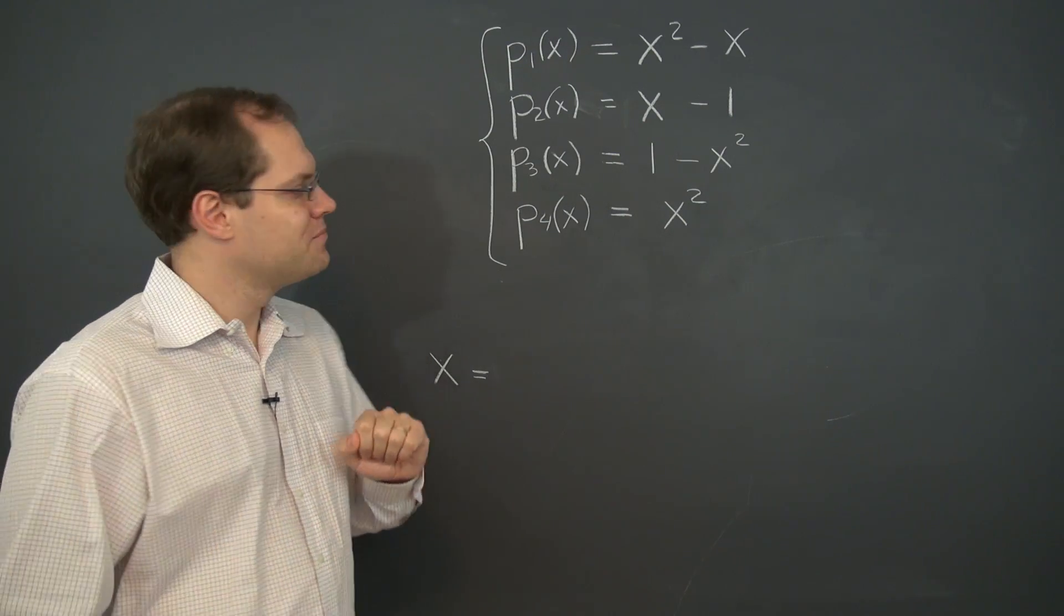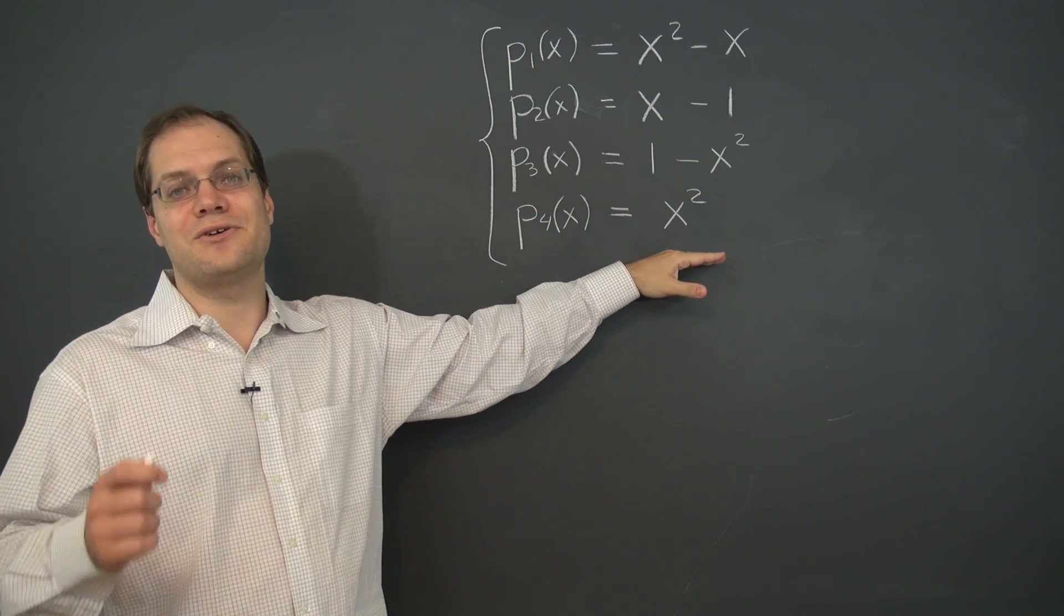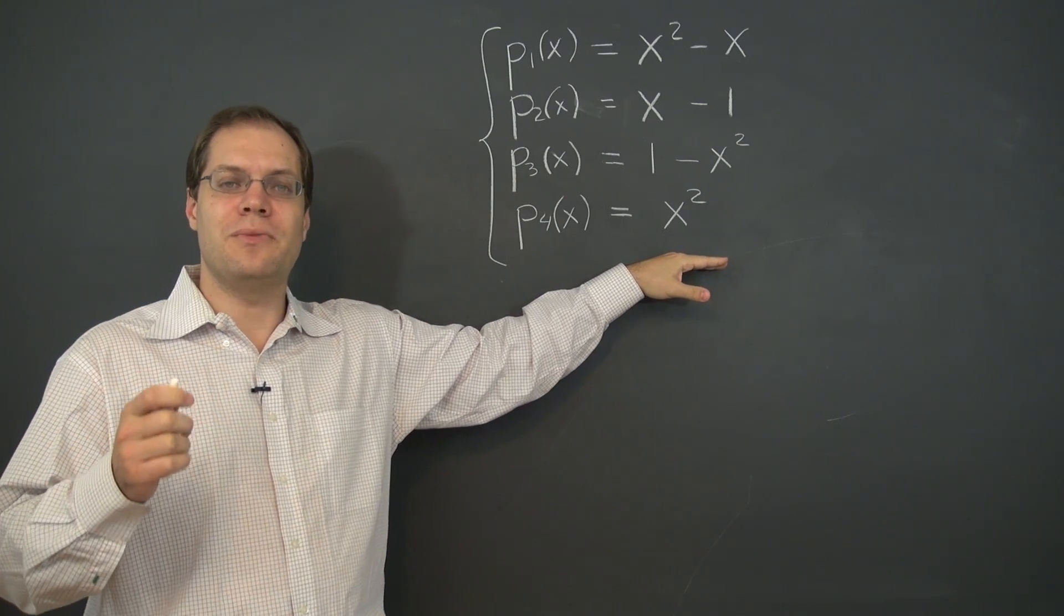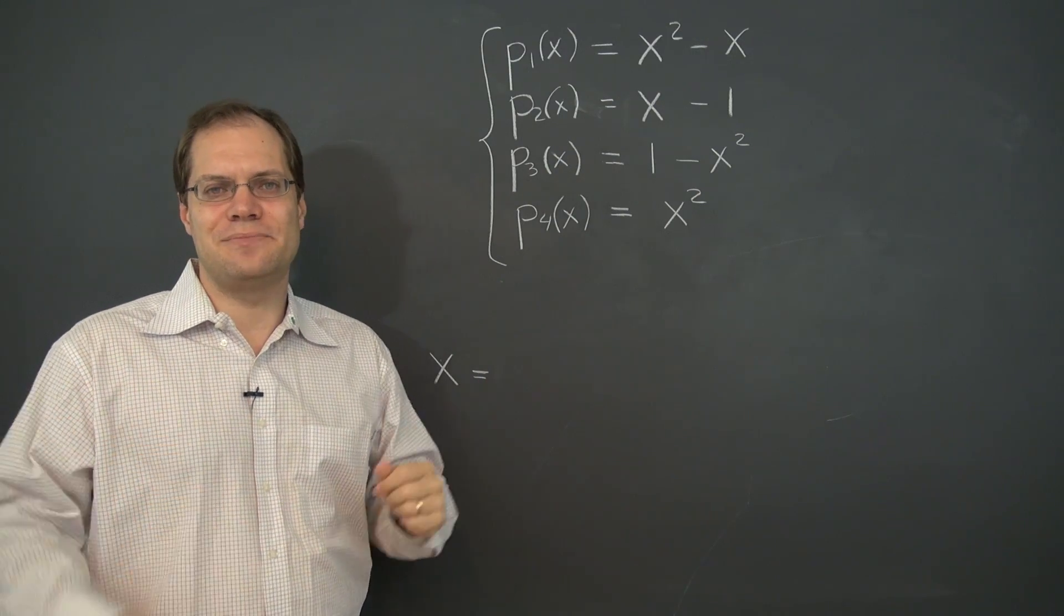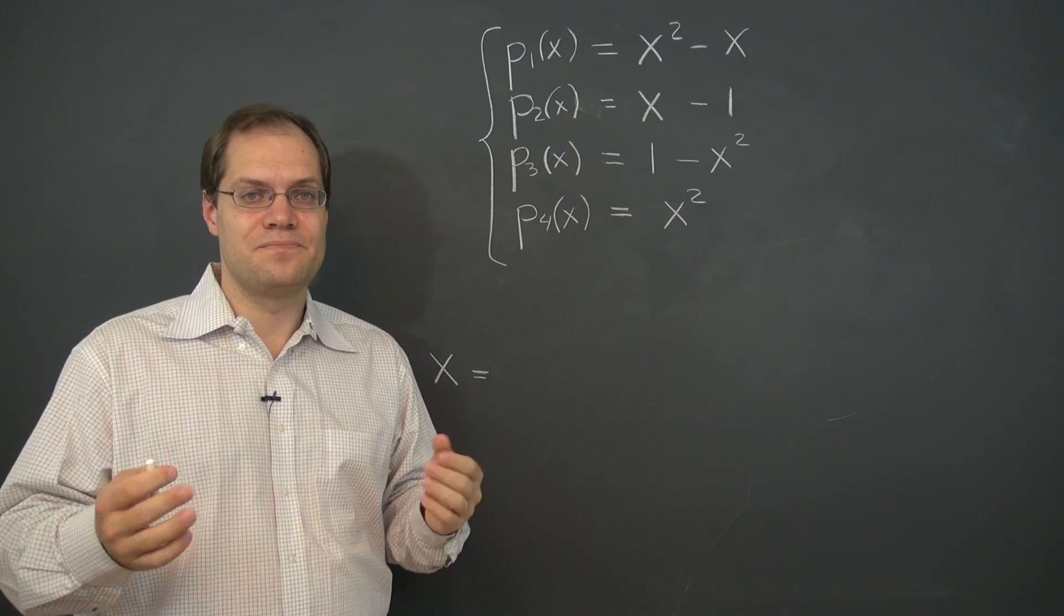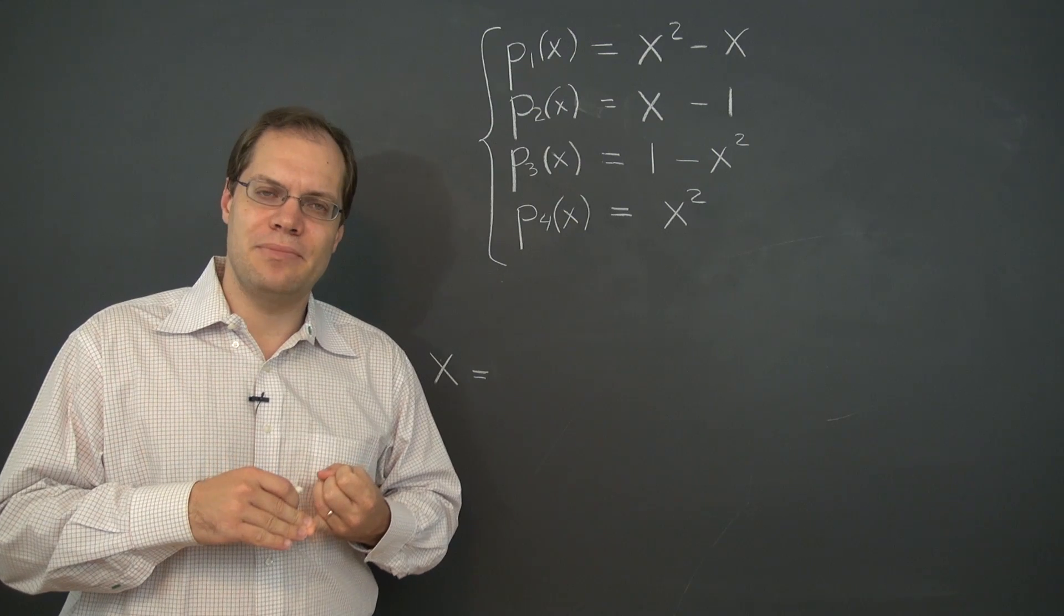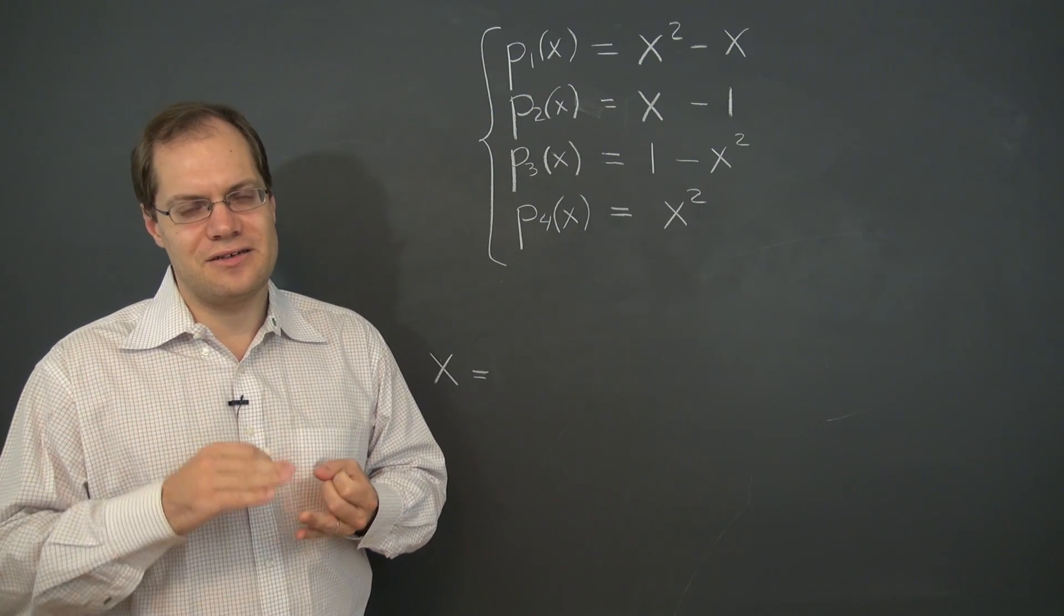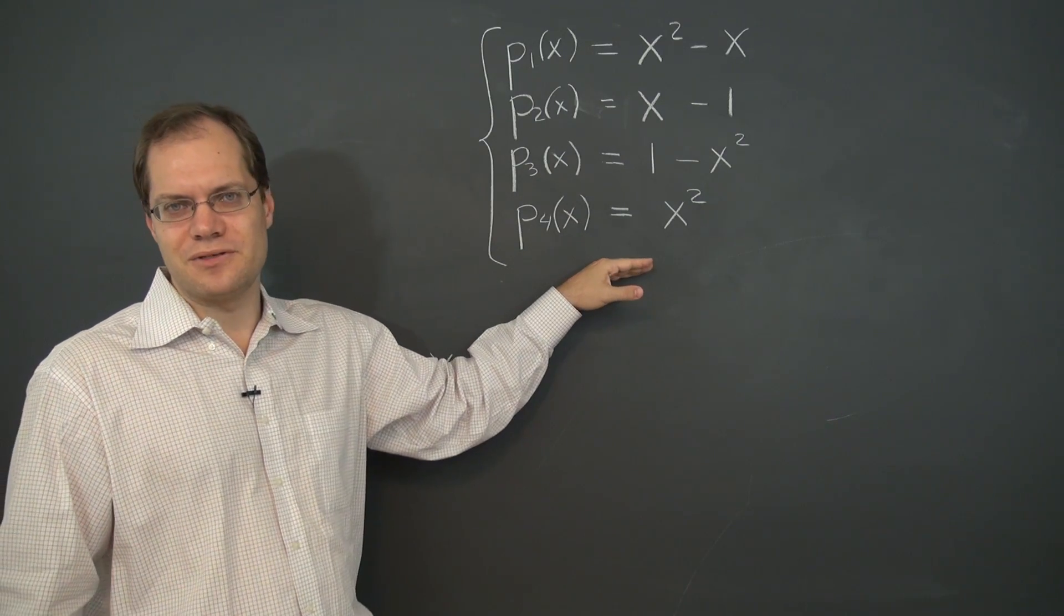And once again, the key is the linear dependence of these four polynomials. That's right, these polynomials are linearly dependent. You may have had the feeling that the concept of linear dependence only applies to geometric vectors, but the whole idea of linear dependence is that it's only based on linear combinations, which are in turn based on adding things together and multiplying them by numbers. All of those things you can do with polynomials.